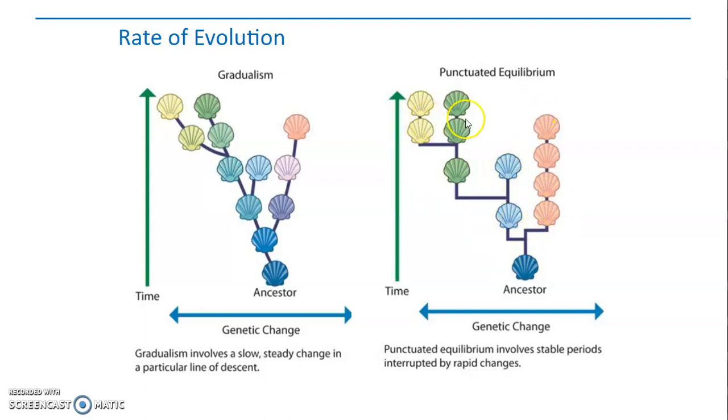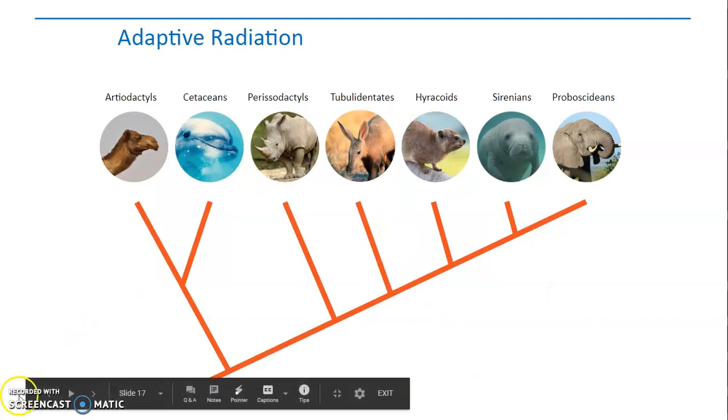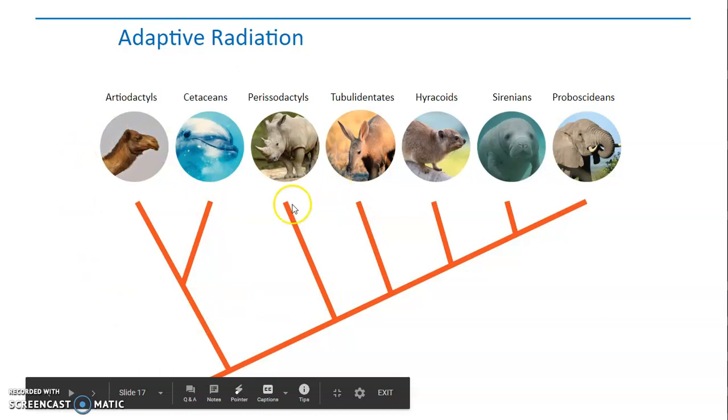There's no slow change over time, whereas over here you can see that going from this light blue to the yellow, we have many different shades in between the light blue and the yellow. Alright, adaptive radiation. So adaptive radiation is the process by which one organism or one species of organisms can branch out and become many different.